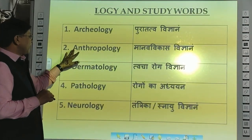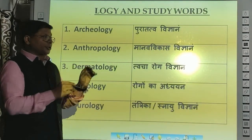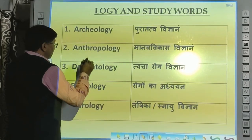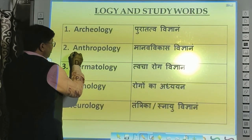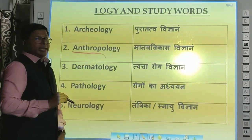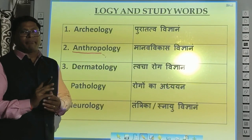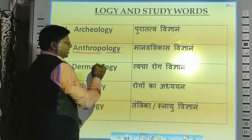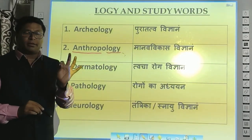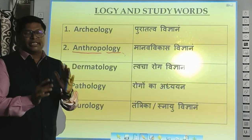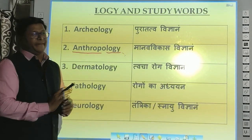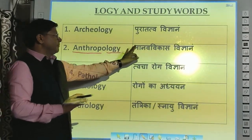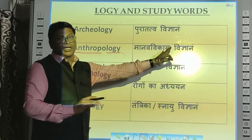The second word is Anthropology. 'Anthropos' means Mano (humankind), and 'logy' means Adhyan (study). When you study humankind, that is Anthropology. Anthropology means Manav Vigyana — the study of human beings.